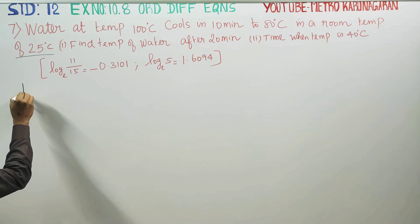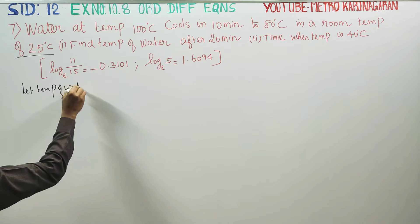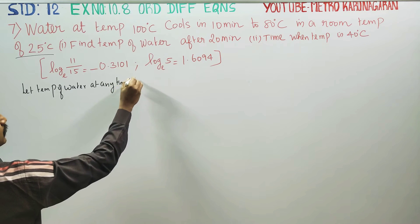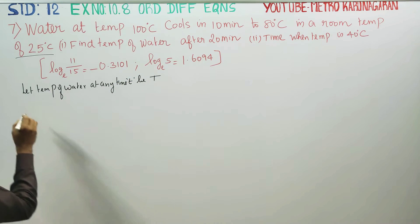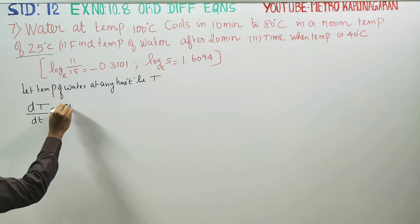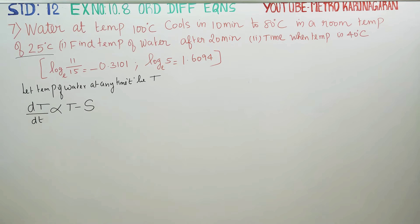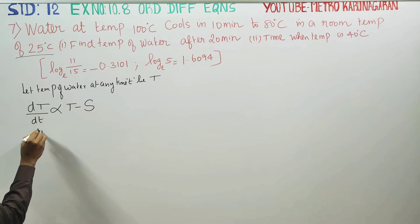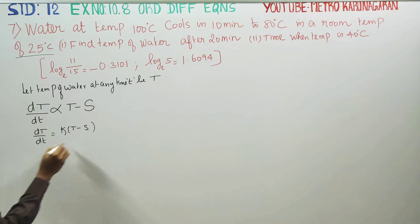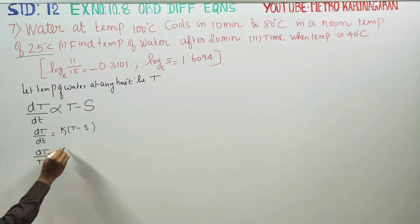Let the temperature of water at any time t be capital T. The rate of change of temperature of water is proportional to the difference between the temperature of the water and the surrounding temperature, that is the room temperature. So dT/dt is equal to k(T minus S). Using variable separable method: dT divided by (T minus S) is equal to k dt.